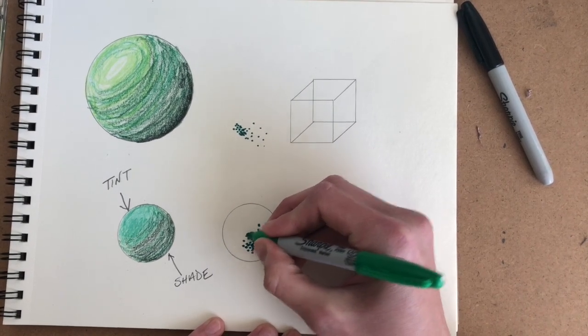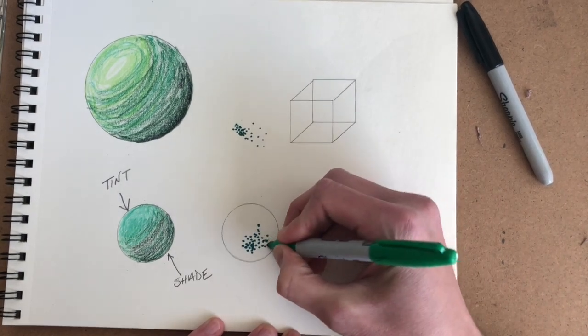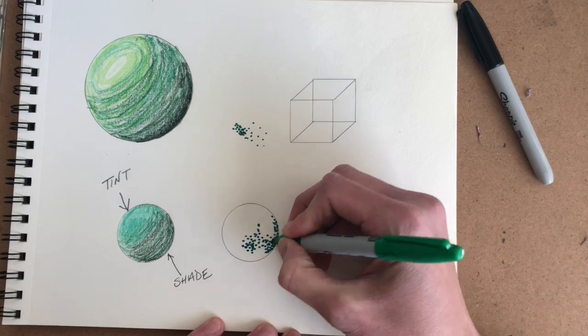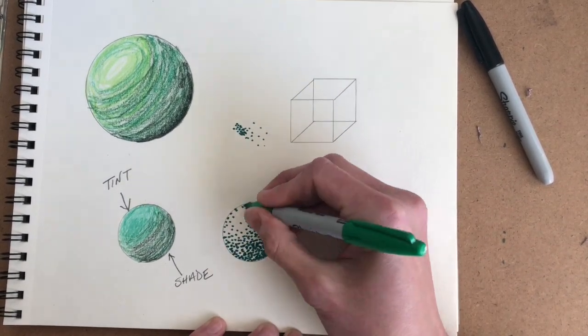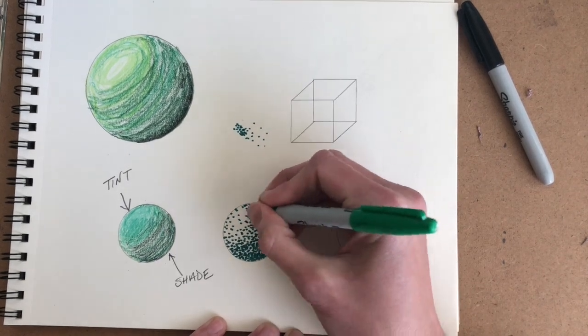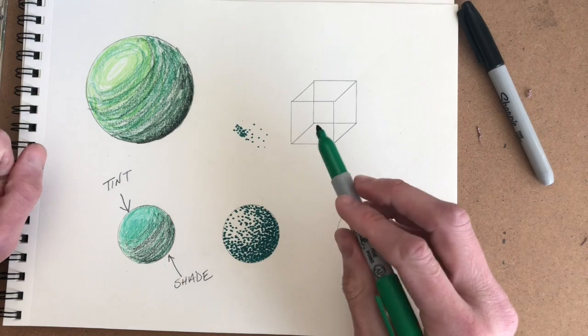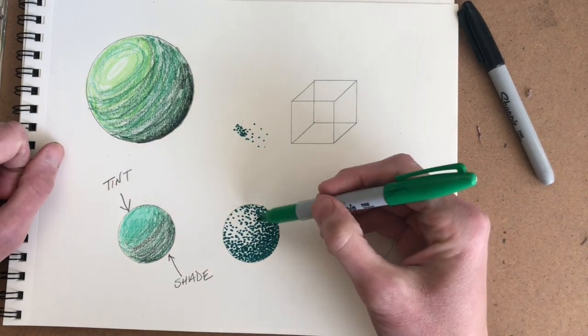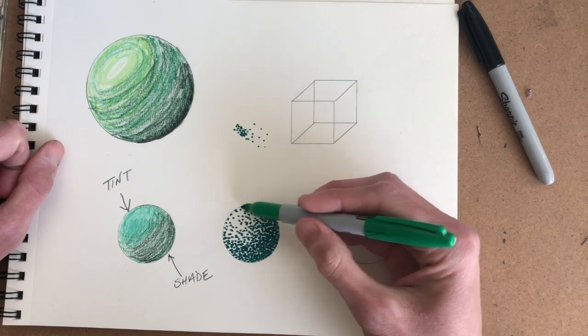So to shade this circle here with marker, I will carefully start adding some green dots. And this process takes time, takes a lot of patience.